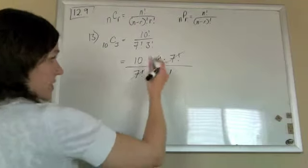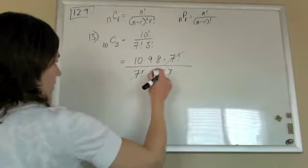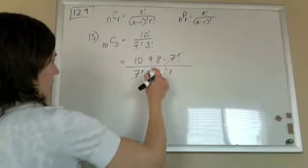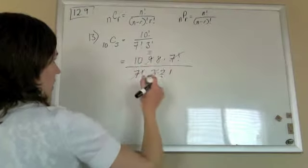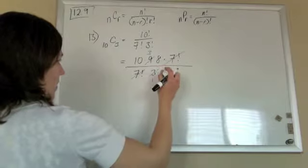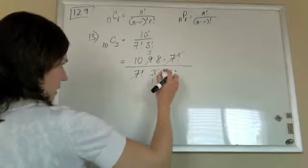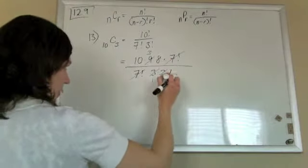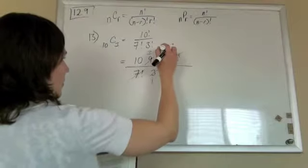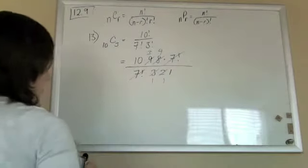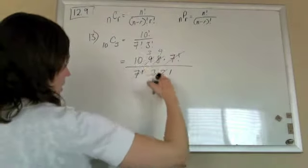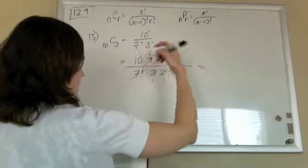I'm just going to cancel everything out. Everything on the bottom should cancel with something on the top. If I divide this by 3, I'll get a 1. Top by 3, I'll get a 3. If I divide by 2, I'll get 1. Divide the 8 by 2, I'll get a 4. So now just multiply that all together, and you'll get 120.